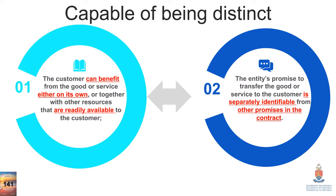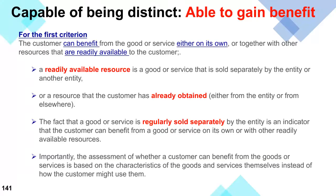The first criterion is very broad — almost anything a business sells could potentially provide a benefit, so it's generally easy to meet. The second criterion is much tighter — it narrows us down to this specific contract. So we go from a very broad first criterion to a more tightly defined, harder-to-meet second criterion.